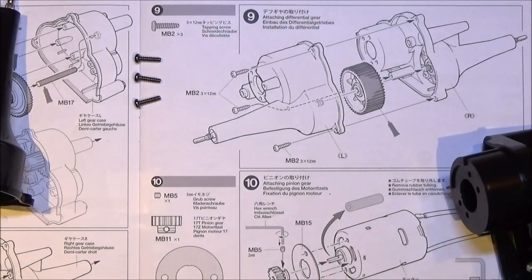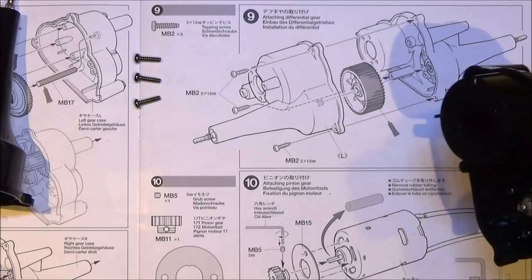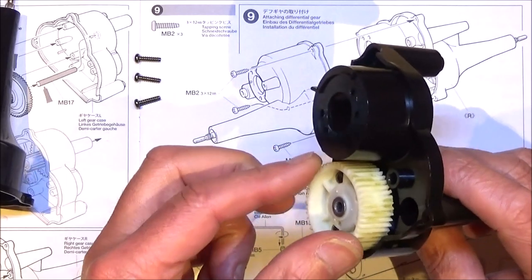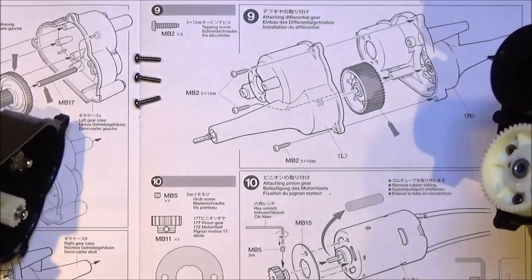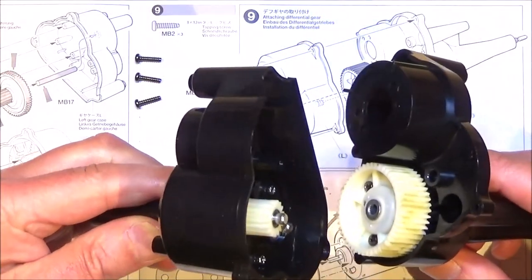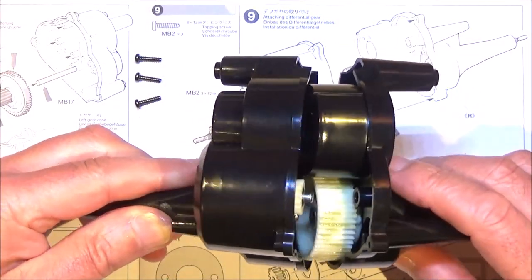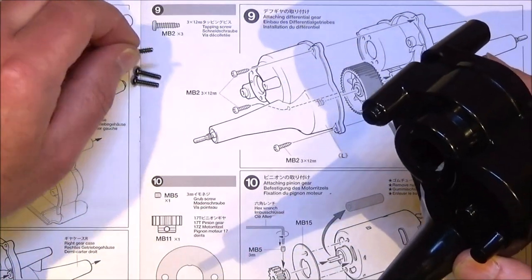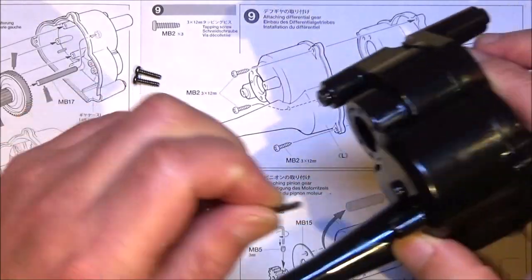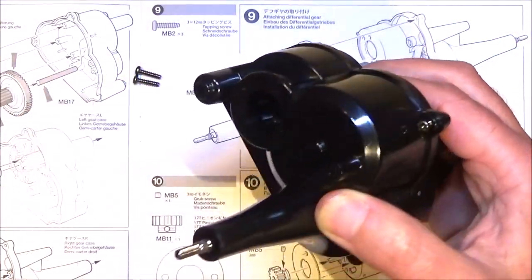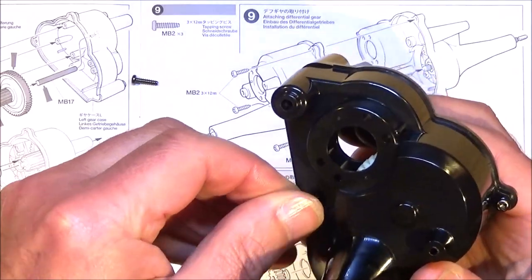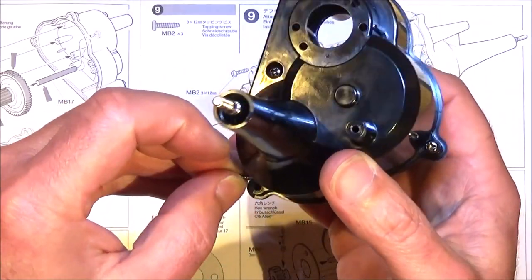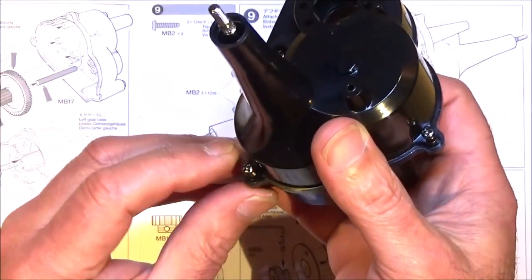So in step 9, we're just going to put that differential inside the case and put the cases together. Get this side lining up with your diagram. What you need to do now is get the other side of the case and join them together. All we need now is the 3x12 self-tapping screws. We've got one in there, one in this hole here, and one in there. Just do those up.